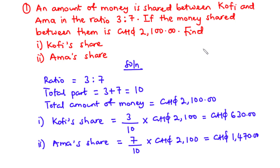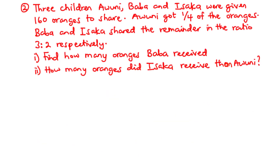Now let's solve a more complex example. For question two: three children — Awinnie, Baba, and Isaka — were given 160 oranges to share. Awinnie got one-fourth of the oranges; Baba and Isaka shared the remainder in the ratio 3:2 respectively. Find (i) how many oranges Baba received, and (ii) how many more oranges Isaka received than Awinnie.